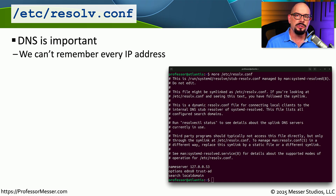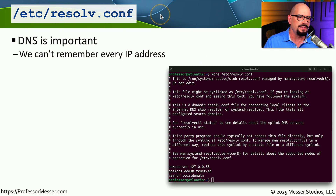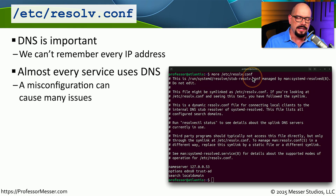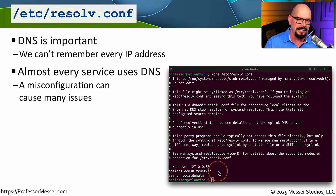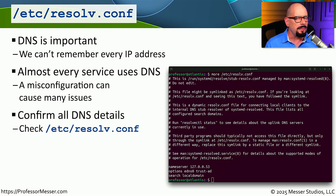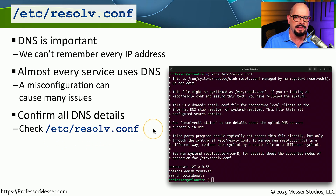If we aren't going to use the hosts file and are using DNS, we tell Linux where the DNS servers are using another file in the /etc directory called resolv.conf. This file contains a list of the DNS servers the Linux machine will use for name resolution. For example, on one device, name server 127.0.0.53 is the only name server listed. If you're troubleshooting a DNS configuration or want to confirm DNS settings, check the /etc/resolv.conf file.